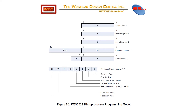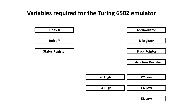This is from the Western Design Center's data sheets for the 65C02. These are the registers visible to the programmer: an accumulator, two index registers, a program counter, a stack pointer, and a status register. In the emulator, I'm going to use the term variable rather than register. The 6502 has all the programmer-visible registers, but it also has a B register and an instruction register.